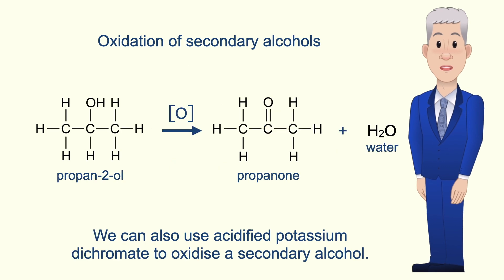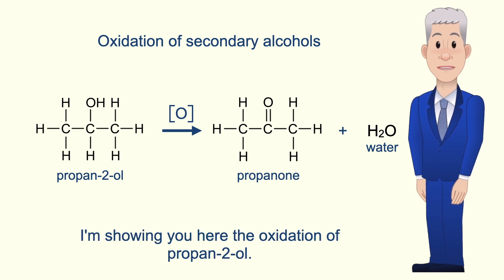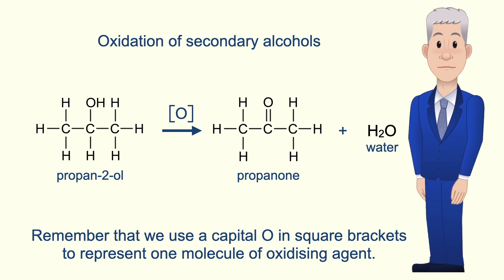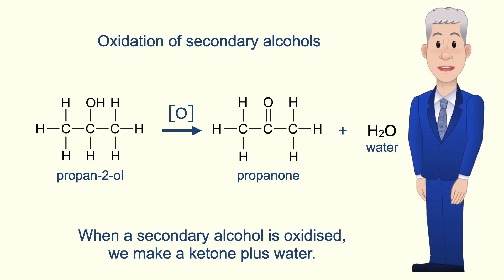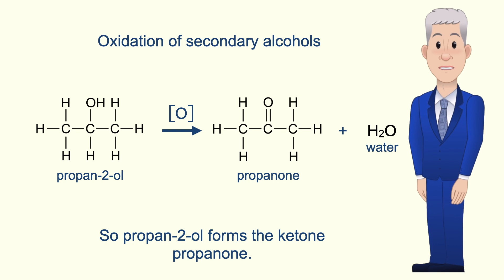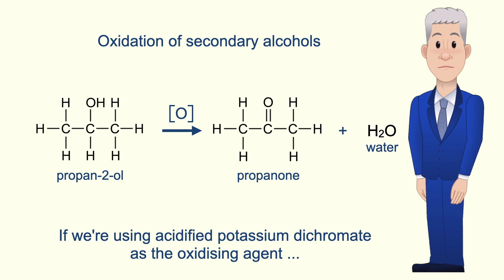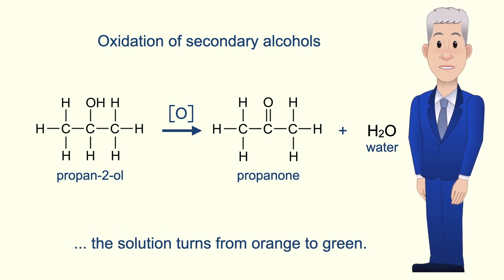We can also use acidified potassium dichromate to oxidize a secondary alcohol. Here is the oxidation of propan-2-ol. Remember that we use a capital O in square brackets to represent one molecule of oxidizing agent. When a secondary alcohol is oxidized we make a ketone plus water. So propan-2-ol forms the ketone propanone, and if we're using acidified potassium dichromate as the oxidizing agent then the solution turns from orange to green.